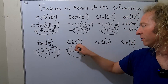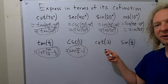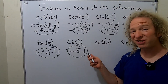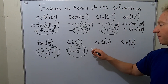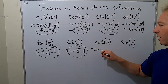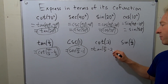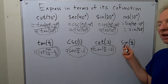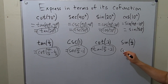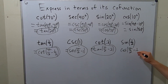Just leave it like that — don't worry about simplifying. Its co-function is tangent, so this is tangent of pi over 2 minus 0.2 — just leave it like that. Its co-function is cosine, so it's pi over 2 minus 1 half.